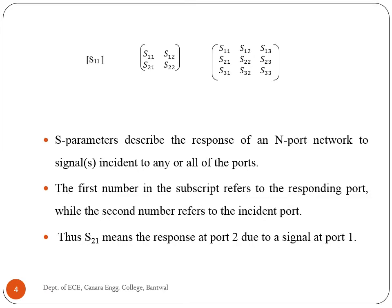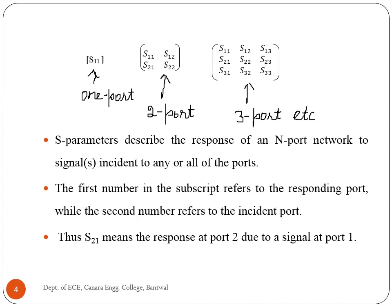The S matrix can be defined for 1 port, 2 port, 3 port networks, and so on. Each S-Parameter is a complex number, so if actual data were presented in matrix format, a magnitude and phase angle would be presented for each Sij.